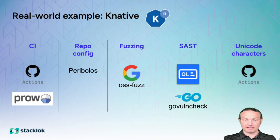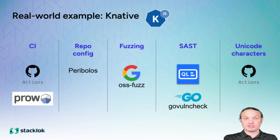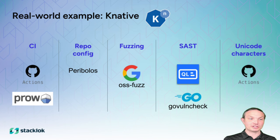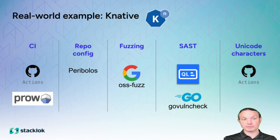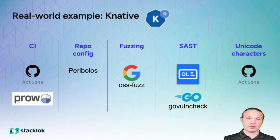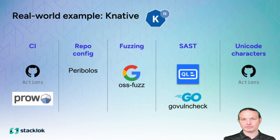Knative uses a combination of tools to handle repo configuration concerns. For CI, we use both GitHub Actions and Prow. For repo configuration, we use Peribolos. We use OSS-Fuzz for fuzzing, and both CodeQL and GoVulnCheck for static analysis — flagging things like forgetting to check the error status of a Go function.